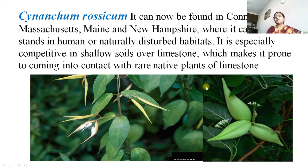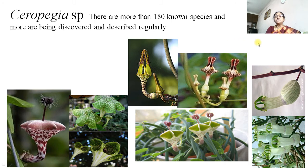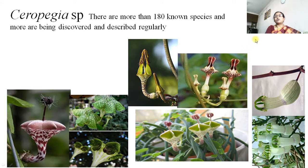Cynanchum rosicum is also a continental plant, specially noted for climbing into contact with rare native plants; it is a wild plant found in many regions. Ceropegia species — there are 180 known species of Ceropegia found in different parts of our country and the world. It is a very large genus with 180 species, each having its own characteristic feature with variations in inflorescence color and ornamentation.